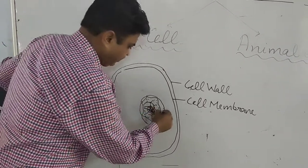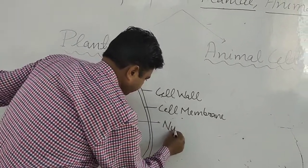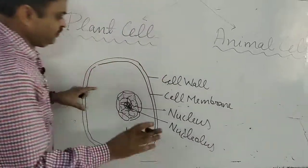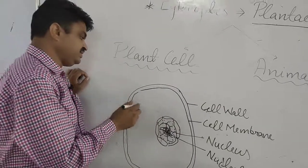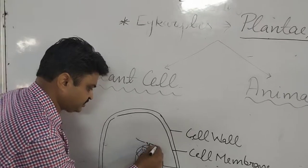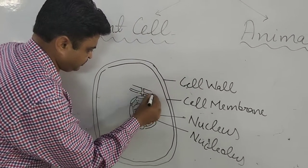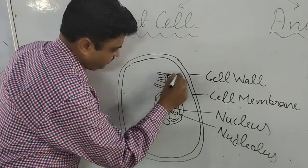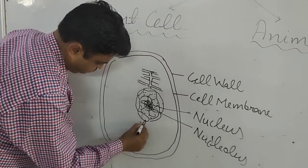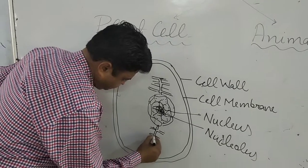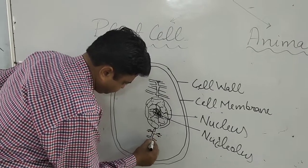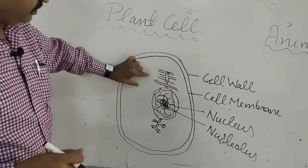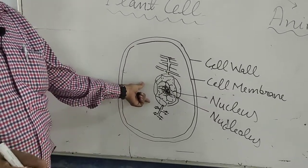The nucleus is found at the side of the cell. Inside the cell there are also small tube-like structures known as endoplasmic reticulum. On some endoplasmic reticulum there are granule-like structures known as ribosomes, while some endoplasmic reticulum do not have them.